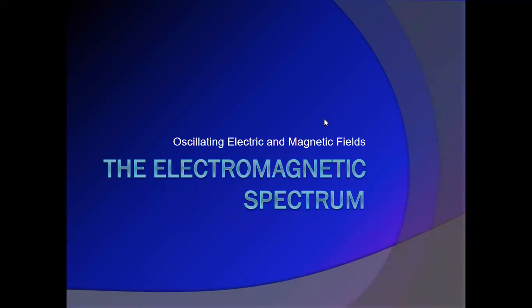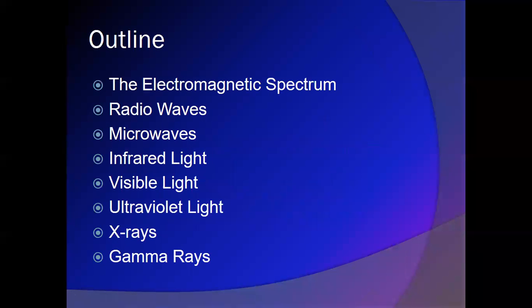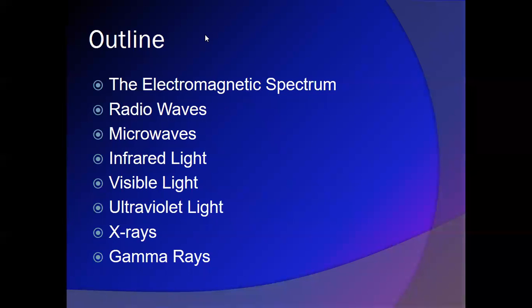This is the chapter on the electromagnetic spectrum. We're going to talk about how the electromagnetic spectrum is broken into seven different parts, and that electromagnetic waves are both oscillations of electric and magnetic fields. Let's start out with what the electromagnetic spectrum is, and then we'll go through each of the seven parts, starting with the longest wavelengths.